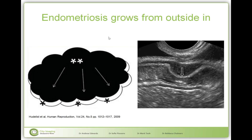Endometriosis will grow from the outside in. The endometrial cells fall onto the bowel in the peritoneal cavity and start forming a nodule first in the muscle layer of the bowel. As they do so the muscle layer gets thickened and you get a hypoechoic nodule, while the hyperechoic submucosa layer gets pushed forward by this nodule. Because bowel nodules are so hypoechoic they are very easy to see.